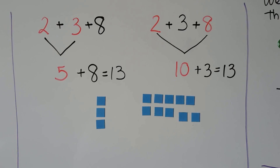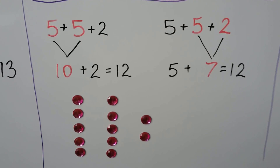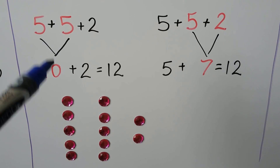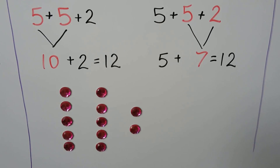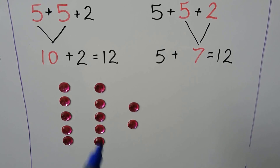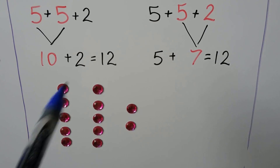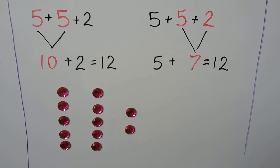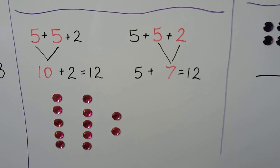We can add any 2 add-ins first. To add 5 plus 5 plus 2, we can add the 5 plus 5 — that's doubles — that makes a 10. Then we can add the 2: 11, 12. We could also add the 5 plus 2, that makes 7, then add the 5 — that makes 12. It's the same number of counters; we haven't added or taken any away. It's the same add-ins. It doesn't matter the order that we add — we'll get the same sum.